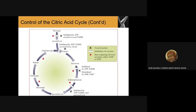When we have high energy, the allosteric inhibitor ATP will bind to isocitrate dehydrogenase and decrease its affinity for the substrate. Furthermore, NADH will also act as an allosteric inhibitor by displacing NAD+ and binding to the NAD+ region of isocitrate dehydrogenase, leaving no place for NAD+ to bind. When there is no NAD+, NADH cannot be produced.